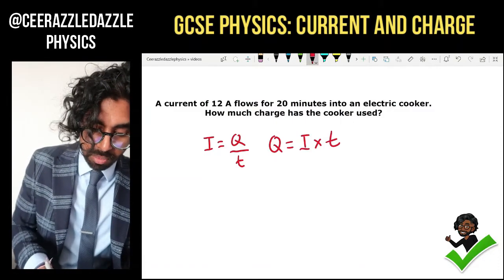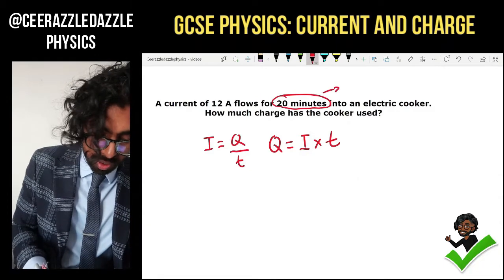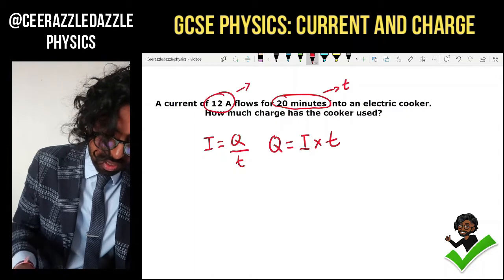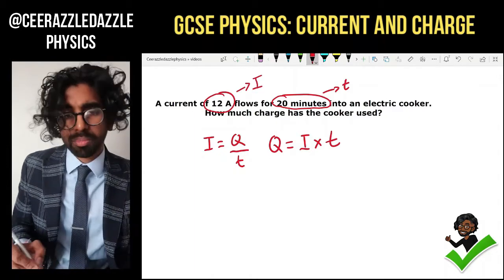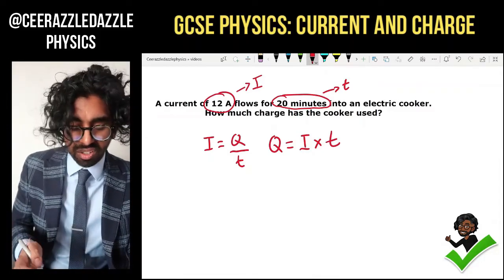Now the time here, so we've got the time, whoops, it's 20 minutes. So we've got the time over here. We've got the current over here. This is the current I. But there's a problem once again. 20 minutes. The formula is not in minutes, it's in seconds.